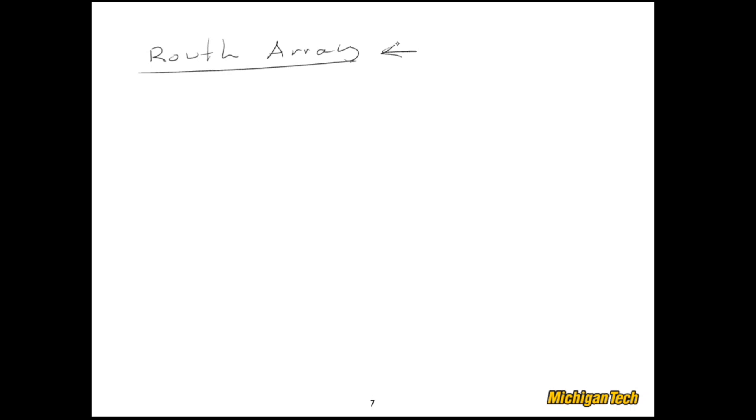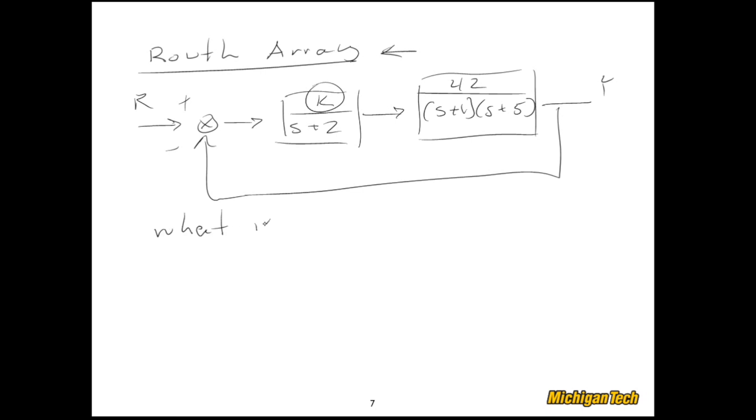Now this is a very interesting technique, and when you look at it you might say, well, why would you do that? Why not just use a root solver? And here's the reason why. Let's say you have this example: here's our control system, K over S+2, and here's our plant, 42 over (S+1)(S+5), and we have this feedback path here. Now everything is known here except for this parameter K. And how about this question: what is the range of K such that the system is stable?